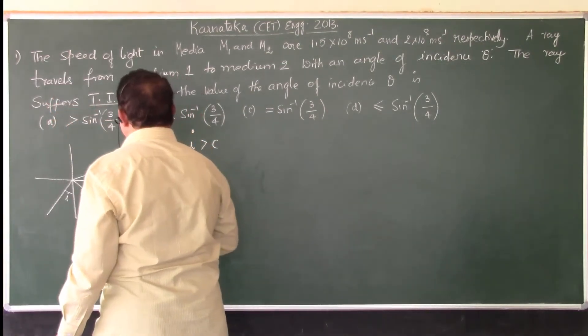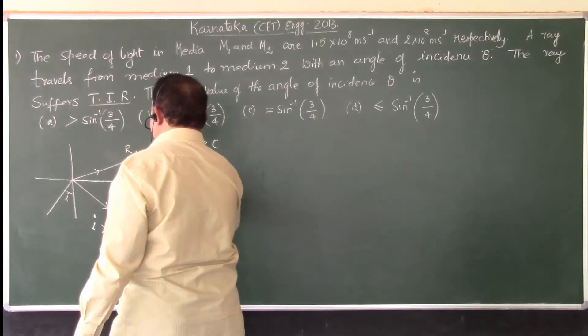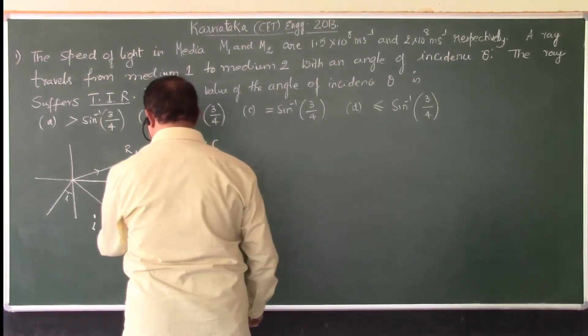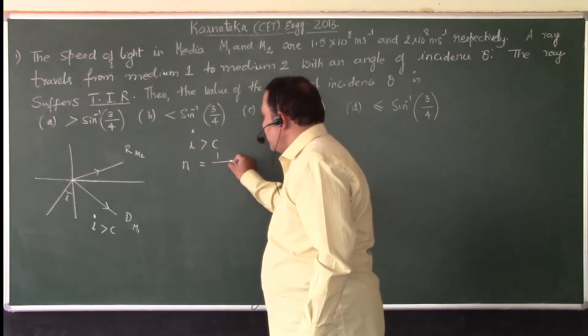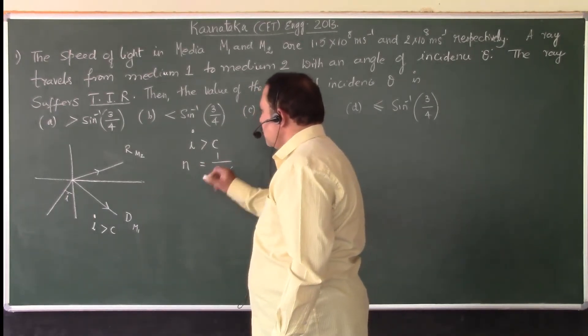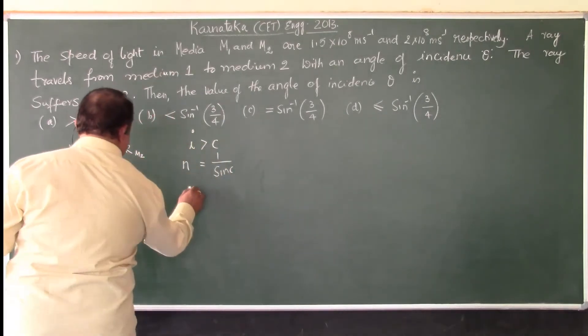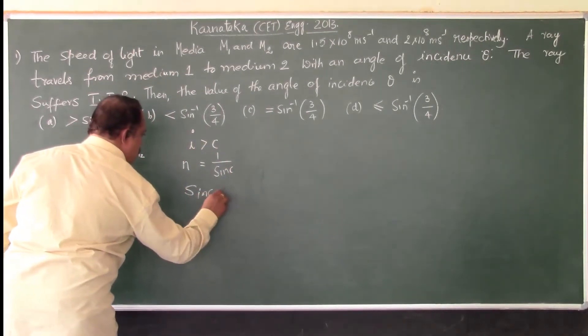What is the relationship between refractive index N and the critical angle? We know that N is equal to 1 by sin C or sin C is equal to 1 by N.